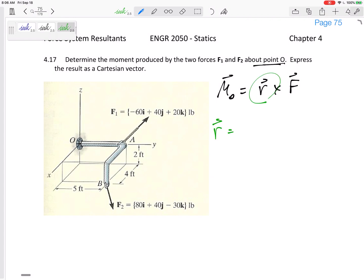The R goes from the point to the force, from the point to the force. So this would just be 5 in the y direction, 5j, alright? And then the force is negative 60i plus 40j plus 20k.